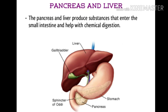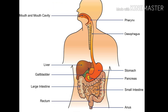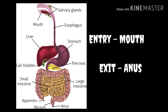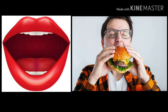Apart from the organs which make up the digestive tract, there are some glands and organs that secrete substances essential for food digestion. The digestive tract is a tube-like structure, so it has two ends: an entry point and an exit point. The entry point is the mouth and the exit point is the anus.